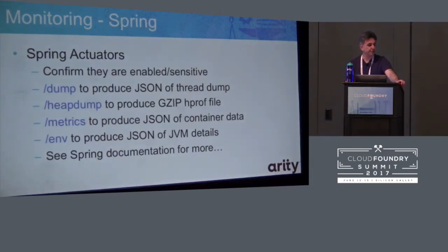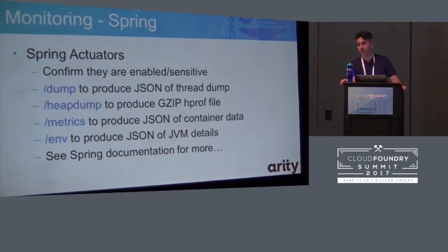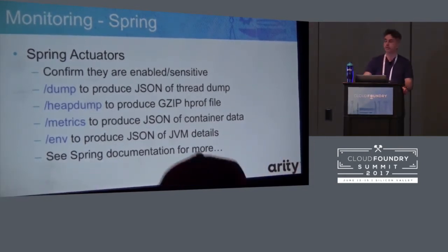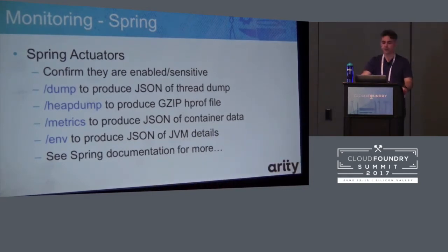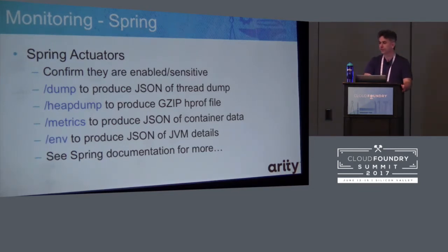The second mechanism — and this assumes you're using Spring — is to use the Spring Boot Actuators. First, confirm that they are enabled and not sensitive. Different versions behave differently: in Spring Boot 1.4 these defaulted to be unavailable, whereas previous versions had made them available out of the box. If you want to make them available, go into your application properties or application YAML and set the associated flag. Once done, call into your application and specify the associated URL. The Spring documentation is very useful — there are plenty of endpoints, but these four are the most useful for solving problems.